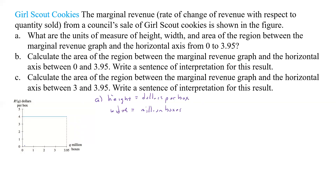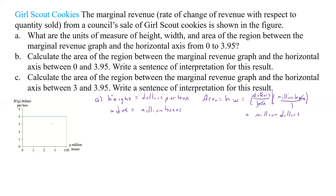And if we find the area, we're going to take the height times the width. So the area is going to be dollars per box times millions of boxes. The box units cancel, and so the area is going to be in million dollars. And that's going to be our area for the rectangle.